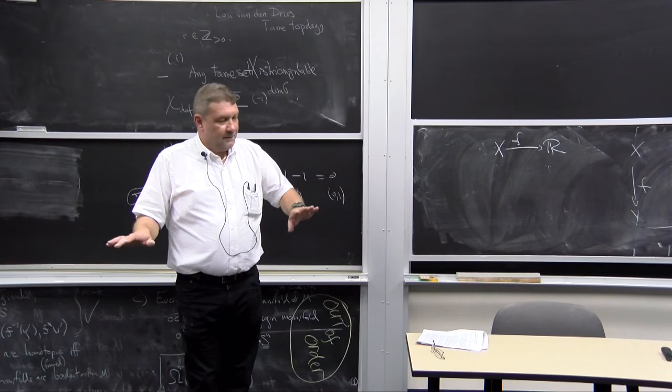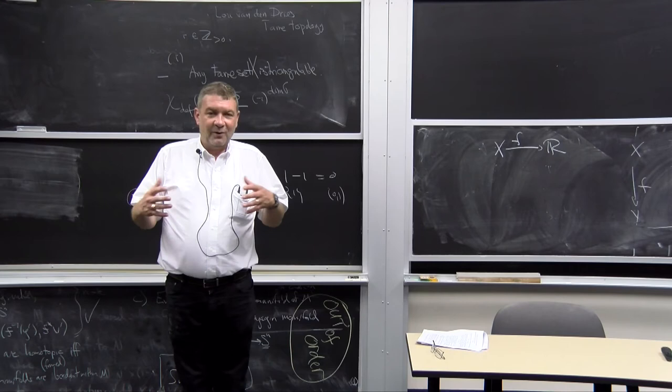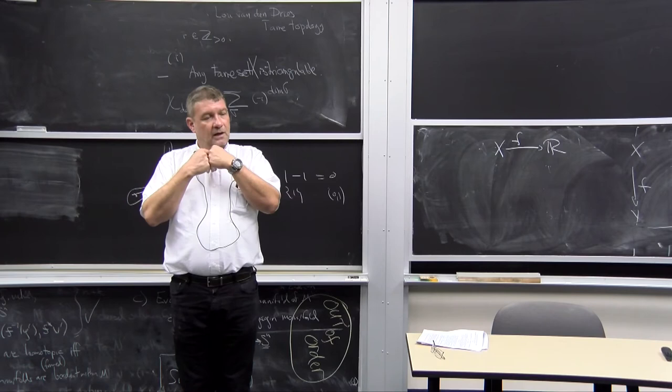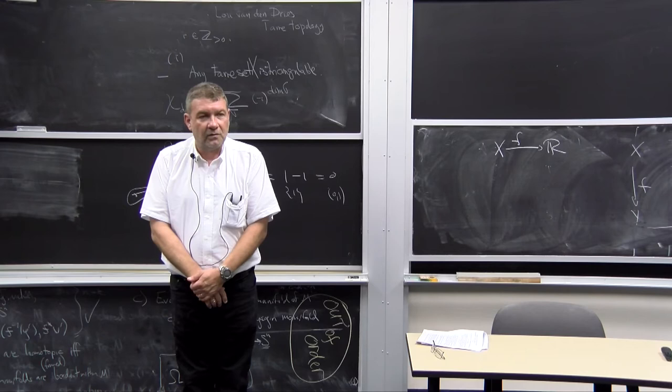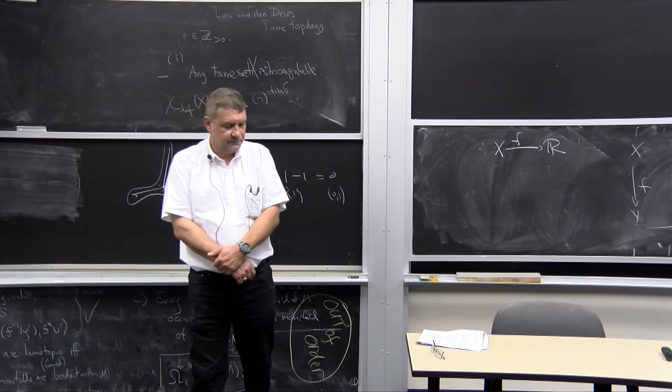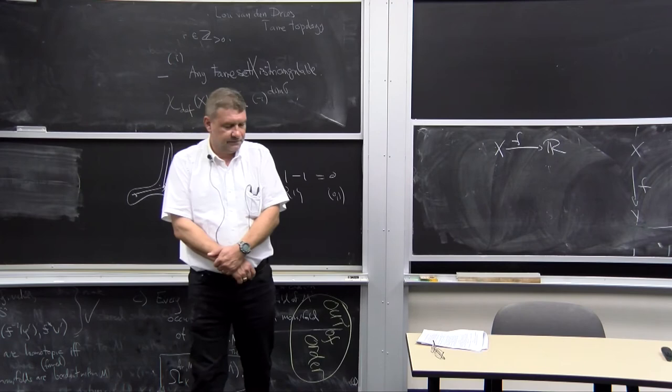I will stop here. Next time, as they say in the Muppet Show, I will use tame sets to define tame currents, because I want to do intersection theory. Then I can define the normal cycles of any compact or bounded tame set, and prove various properties. Thank you.